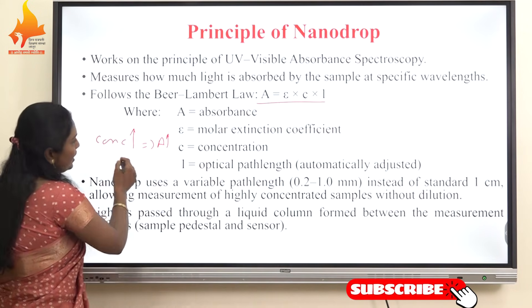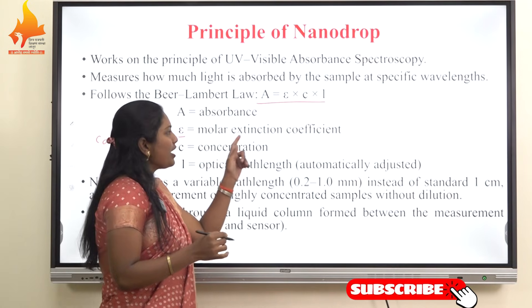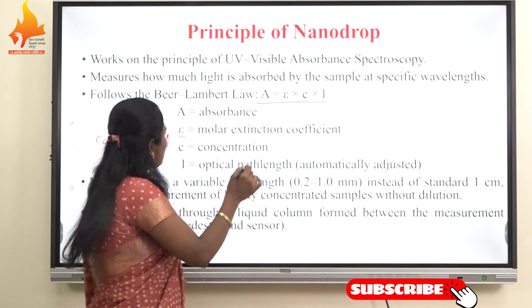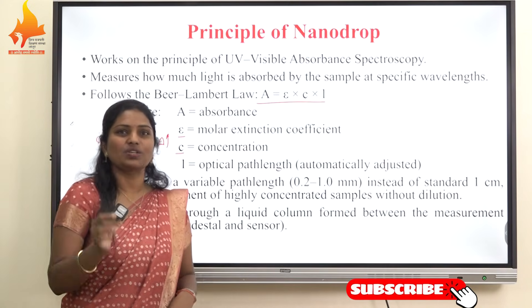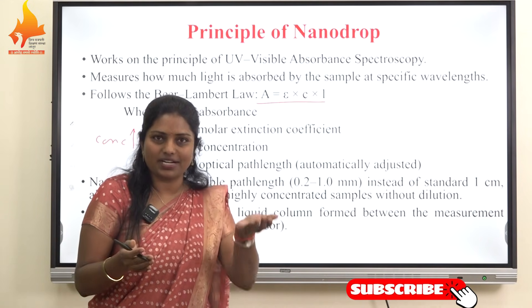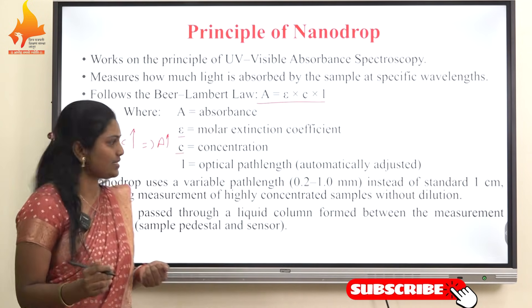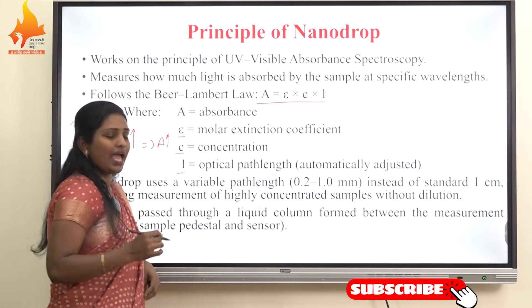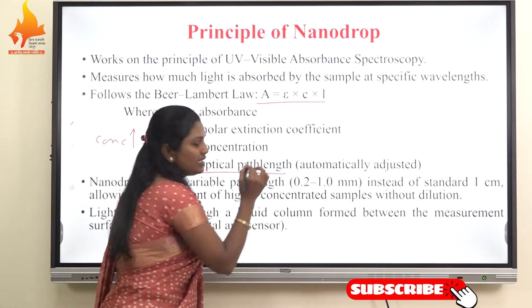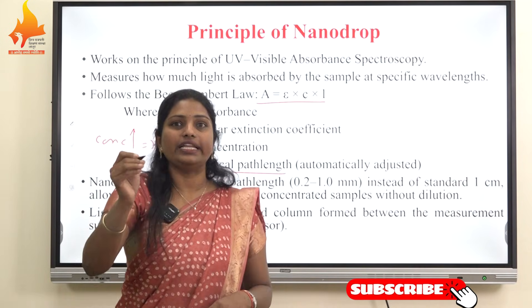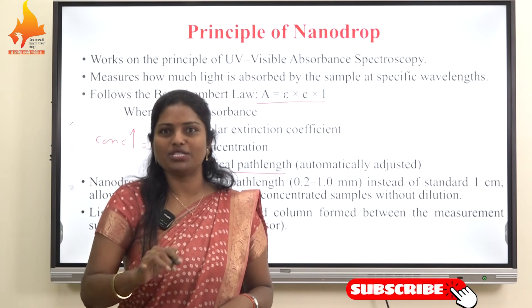In the Beer-Lambert equation, epsilon (ε) is the molar extinction coefficient. C is the concentration — as concentration increases, absorbance of the sample increases. L is the optical path length, which is automatically adjusted in the nanodrop technique, enabling accurate measurement of concentrated samples without dilution.